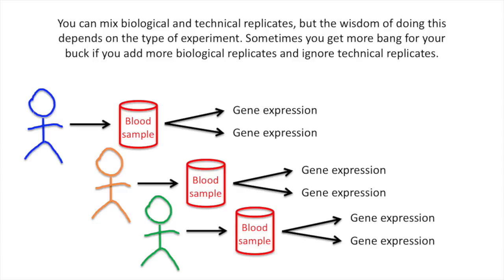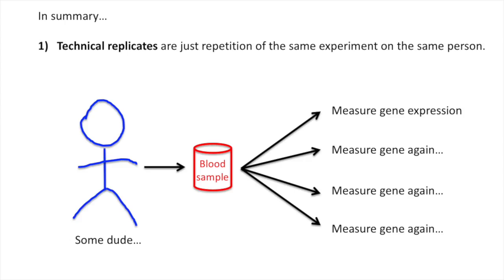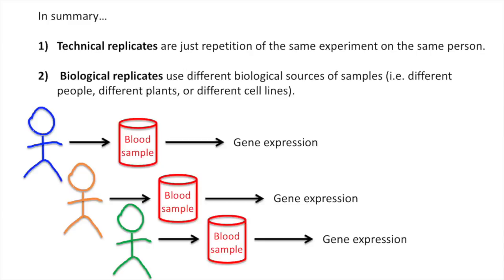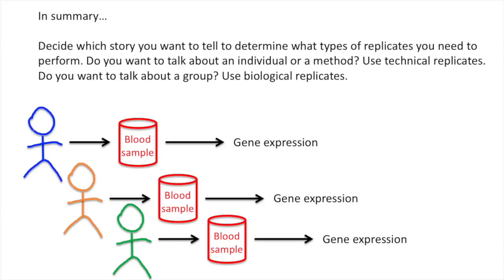In summary, technical replicates are just repetition of the same experiment on the same person. That means we can take one sample from one person and do a bunch of replicates on that one sample, or we can take a bunch of samples from that one person and do experiments on each sample. In both cases, they're technical replicates. Biological replicates use different biological sources of samples — i.e., different people, different plants, or different cell lines. Decide which story you want to tell to determine what types of replicates you need to perform. Do you want to talk about an individual or a method? Use technical replicates. Do you want to talk about a group? Use biological replicates.